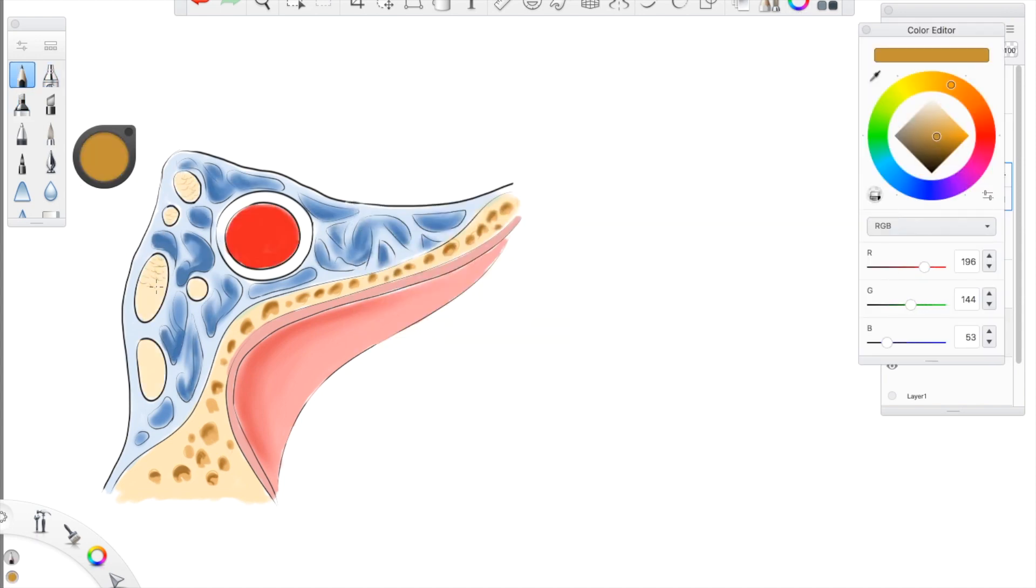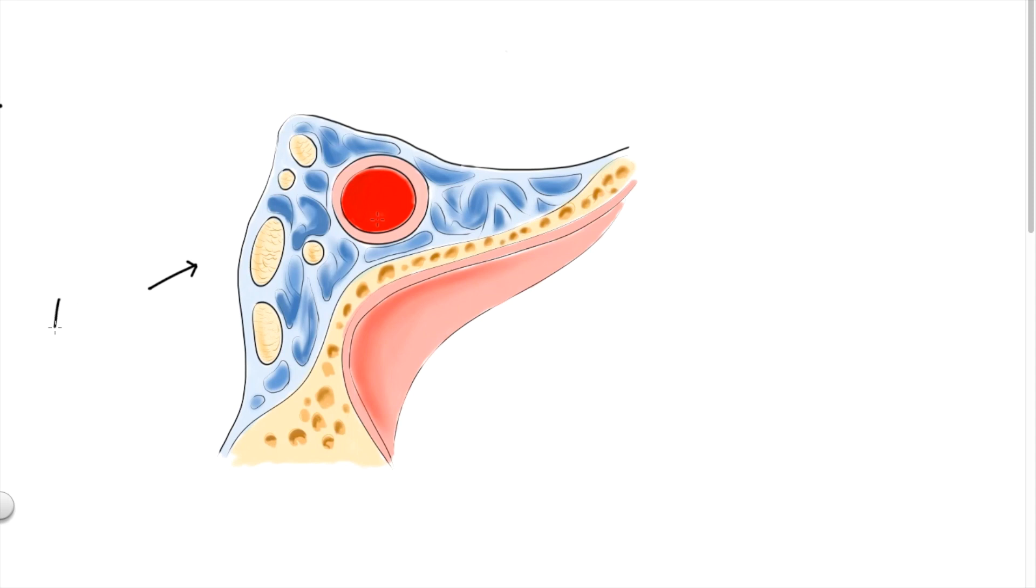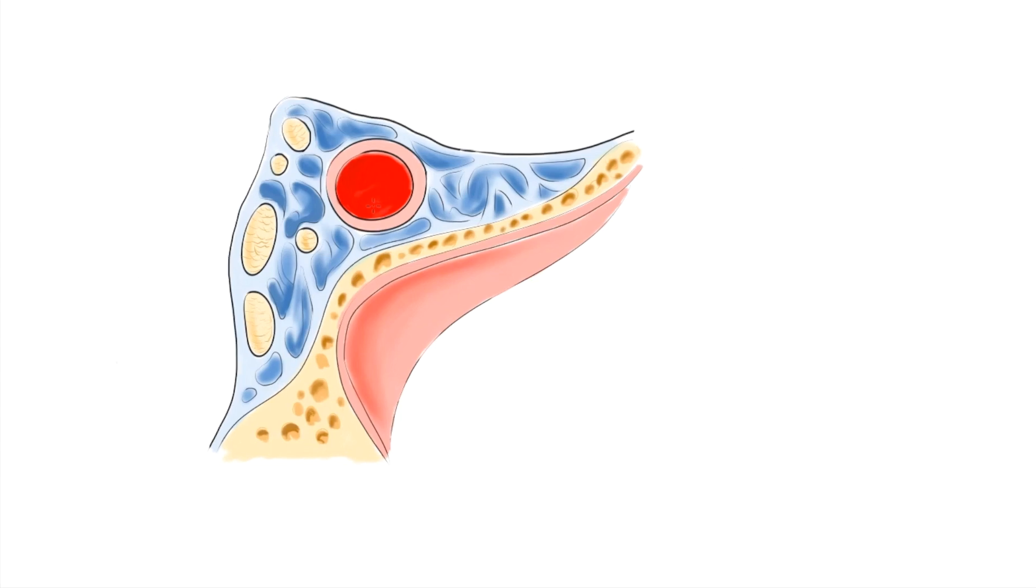Let's see what are the important structures present in cavernous sinus. Here this is the lateral wall of cavernous sinus, and this portion is the superior portion and this is the inferior portion.